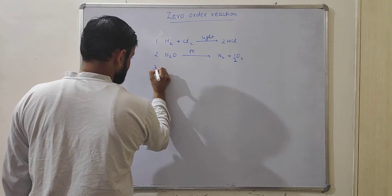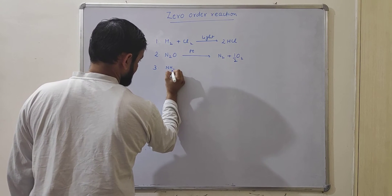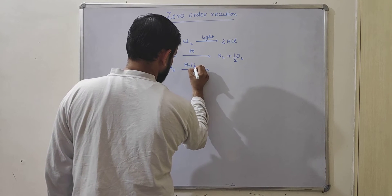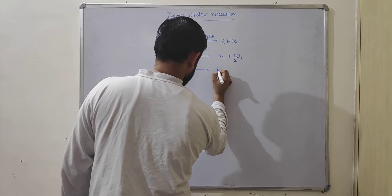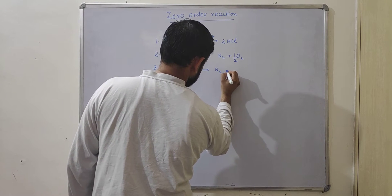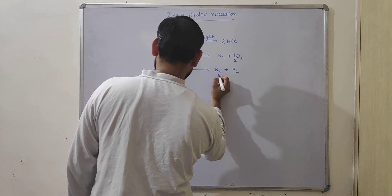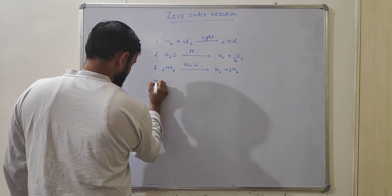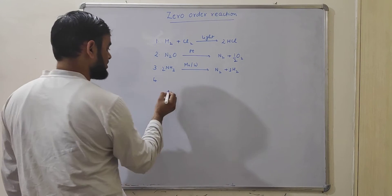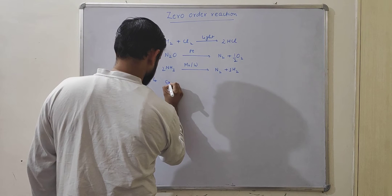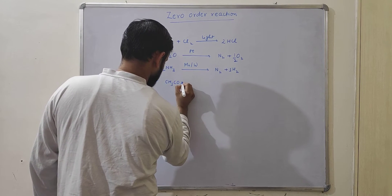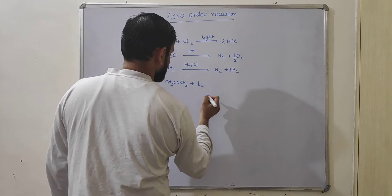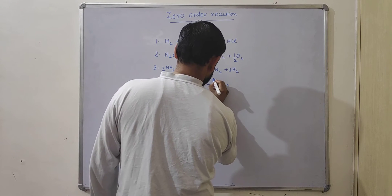Further examples include the decomposition of ammonia on molybdenum or tungsten to produce nitrogen and hydrogen, and the iodination of acetone with iodine in the presence of an acid catalyst.